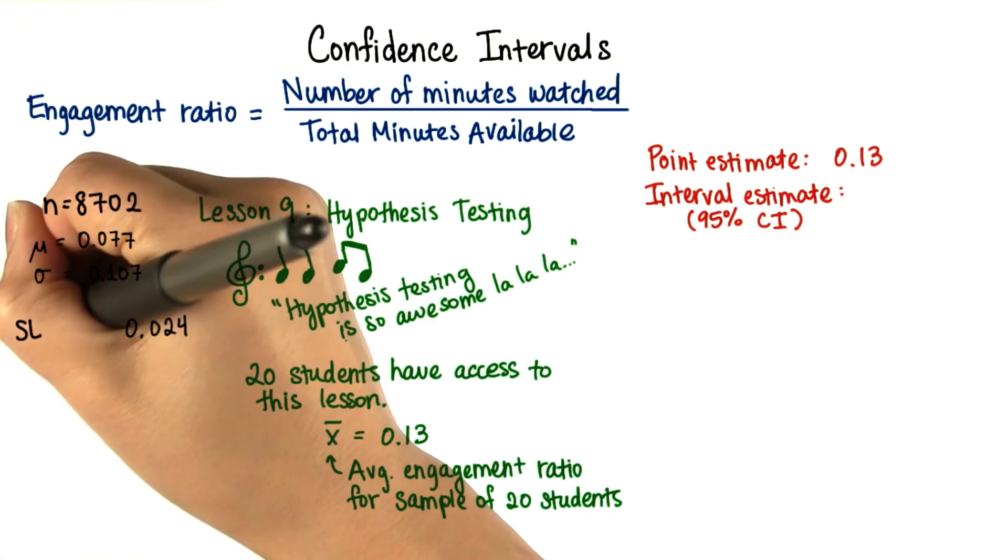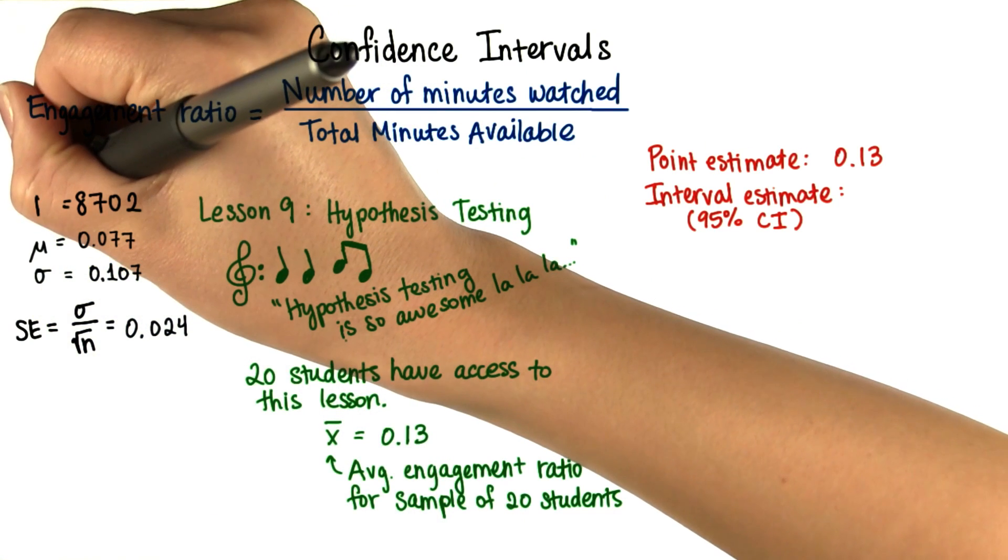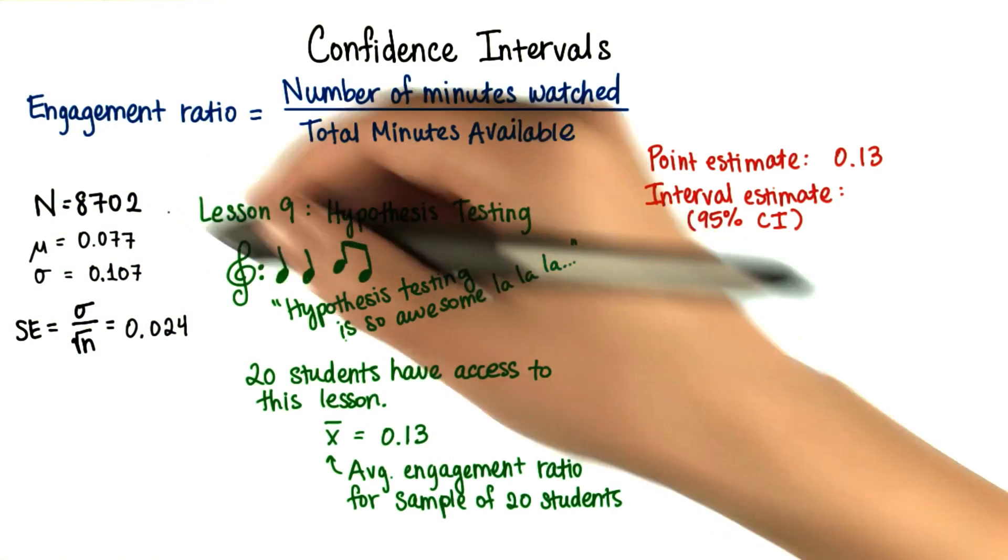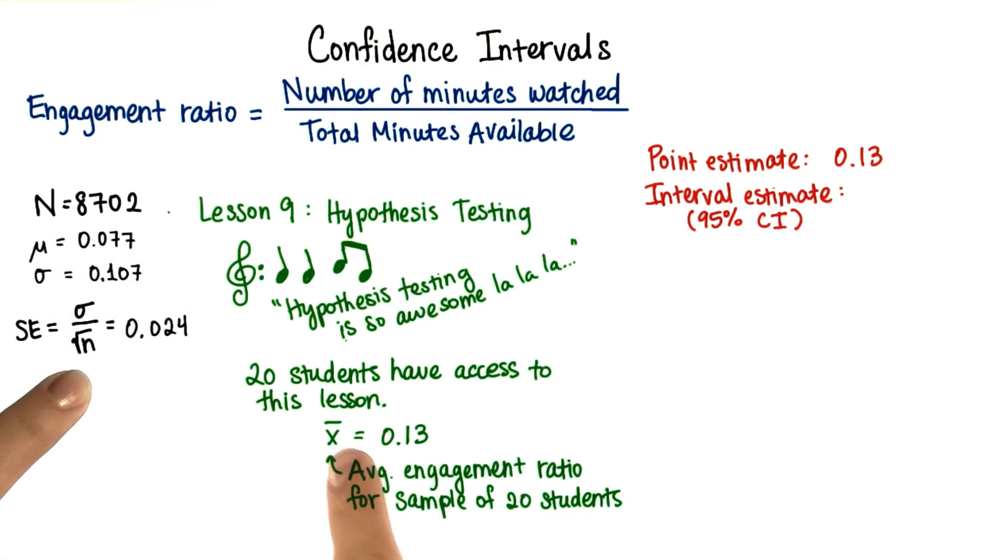I'm going to put our standard error of the mean over here. And I really should make this capital N since it's the population, and N is the sample size 20.